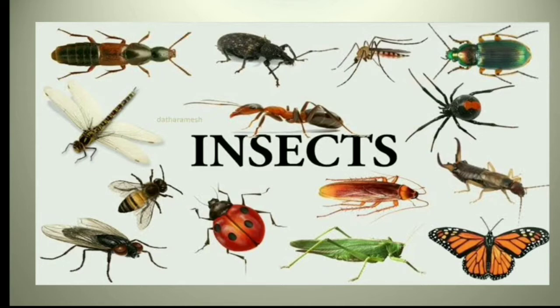Insects are usually the small creatures that we often see in our surroundings. Some of the common insects which we come across in our daily lives are ants, beetles, bees, flies, mosquitoes and cockroaches.